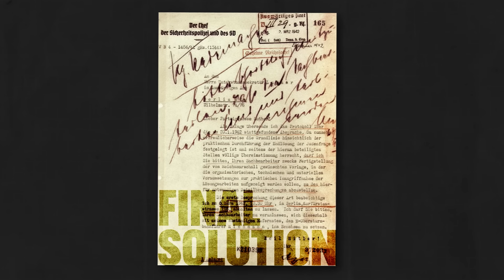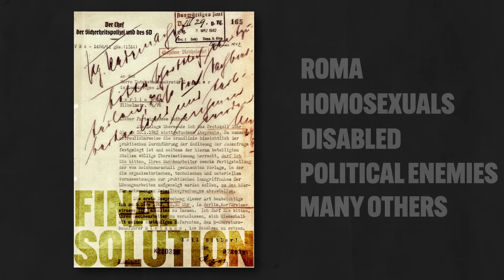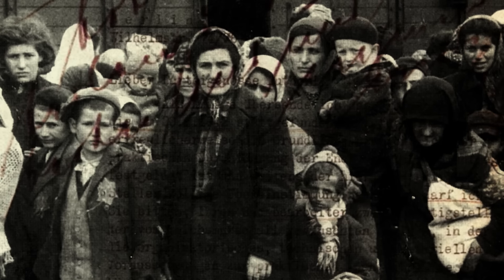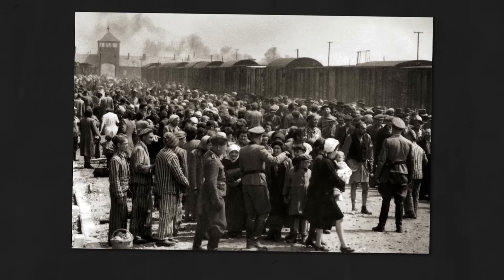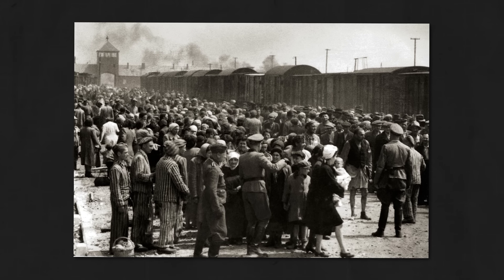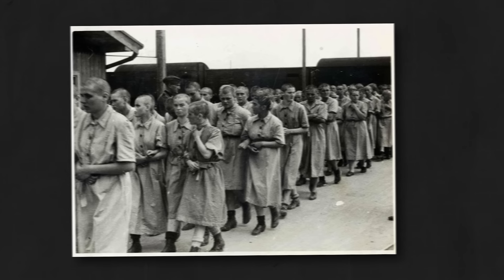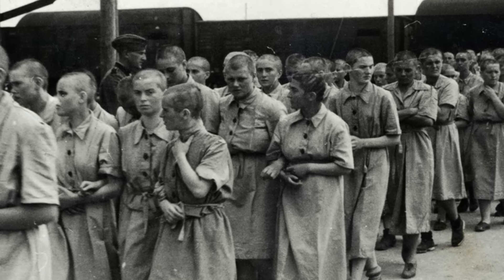It was a program known as the Final Solution, and though it targeted the Roma, homosexuals, disabled people, political enemies, and several other groups, by far the group who felt the hardest blow of this policy was the Jewish population. Before the war began, the Nazis enacted the Nuremberg Laws, which stripped the rights of Jews and forced them into ghettos where they were marginalized, abused, and brutalized. But once the war began, Hitler made use of industrial technologies to construct concentration camps where Jews were sent for hard labor, and extermination camps where they were sent to be murdered with industrial precision and efficiency.